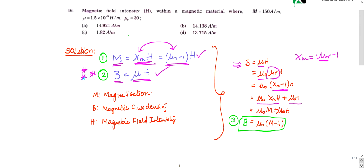So what is χₘ into H? I already discussed in the second formula. χₘ into H is nothing but magnetization M. So B is nothing but μ₀M plus μ₀H.